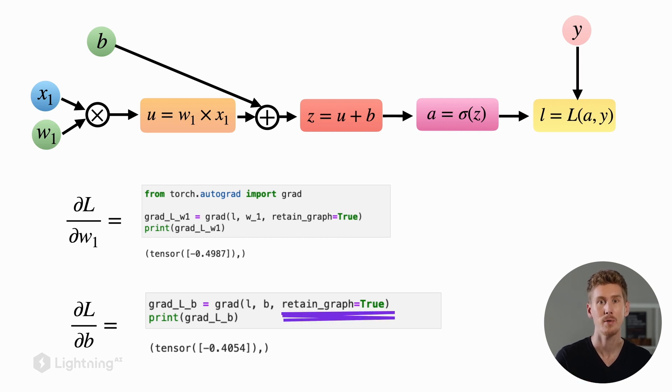Notice that we again set retain_graph equals to true. This is not necessary here because we could be done at this point. However, I wanted to show you something else in PyTorch for which we need to keep the computation graph around a little bit longer. I wanted to show you a convenient trick here in PyTorch, which we will be using a lot when training deep neural networks later, and that is the backward method.